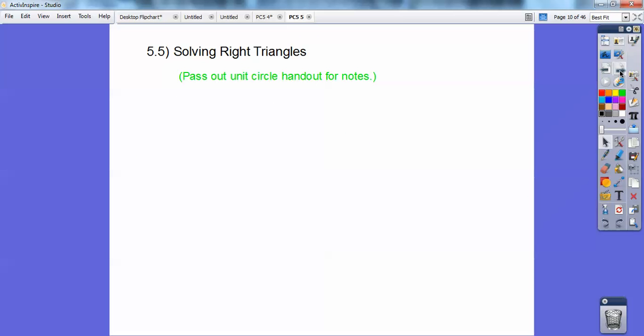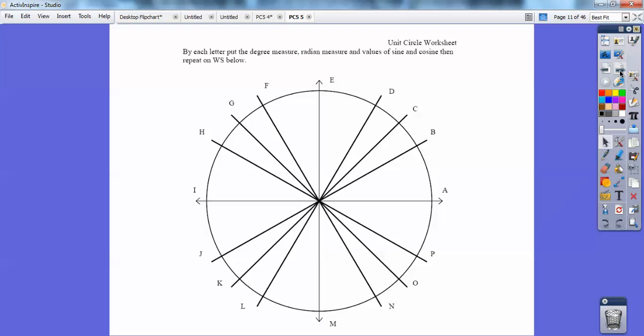All right, so if you were in my class, I'd pass out this unit circle, and then we'd start going over this. Now, in this unit circle, you should know that everything, all are positive. The sine's positive, the cosine's positive, and the tangent's positive in quadrant one. You should know your 30 degrees, your 45 degrees, and your 60 degrees for sine, cosine, and tangent.